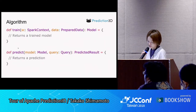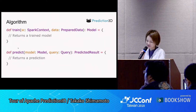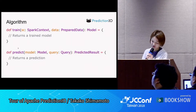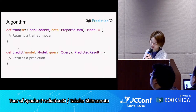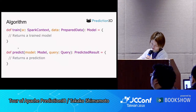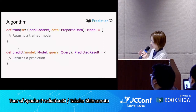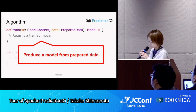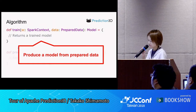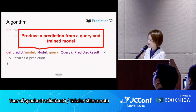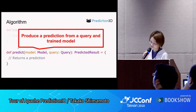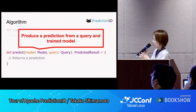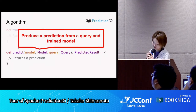The algorithm component includes two methods, which are train and predict. Train is responsible for training a model, and predict is responsible for using its model to make a prediction.